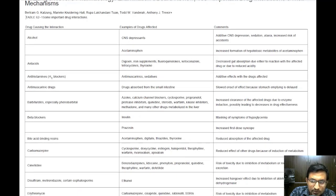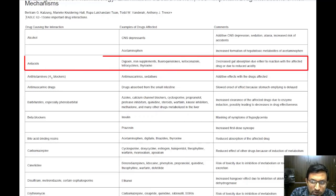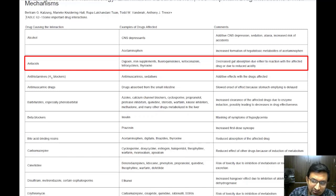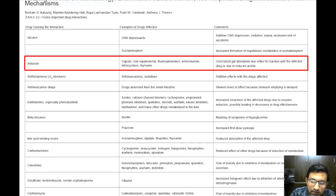The second important drug interaction involves antacids. Antacids are commonly used to reduce stomach acidity, but they can interfere with the absorption of various drugs in the gastrointestinal tract. This can occur through direct chemical interactions or by altering the pH level in your stomach. Drugs that can be affected include digoxin, a positive inotropic heart medication, iron supplements, certain antibiotics like fluoroquinolones and tetracyclines, antifungal drugs like ketoconazole, and the thyroid hormone thyroxine.